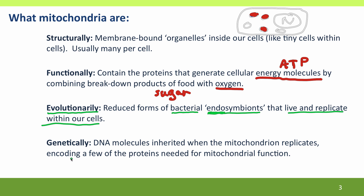Genetically, mitochondria contain DNA molecules. Each mitochondrion contains at least one, and usually several, DNA molecules. These DNA molecules are inherited every time the mitochondria replicate. The mitochondria replicate by division, in the same way that bacteria do. And when they replicate, their daughter cells inherit their DNA molecules. These DNA molecules encode a few of the proteins needed for mitochondrial function, and I'll show you where the rest of the proteins come from in a minute.